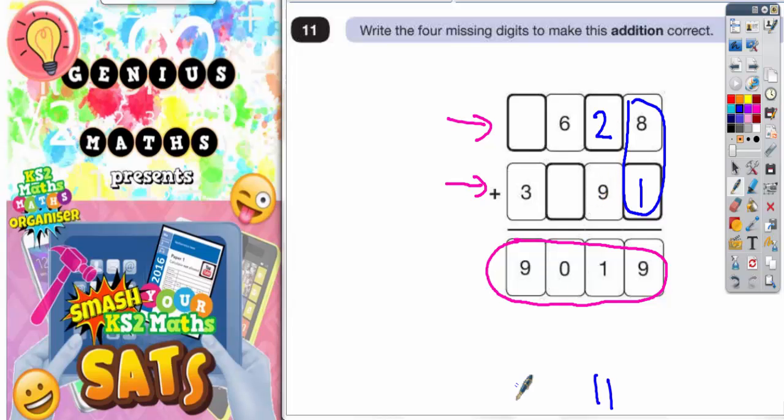And if you do 2 plus 9 to make 11, you would put the 1 in and you would carry the 1 to the next column.